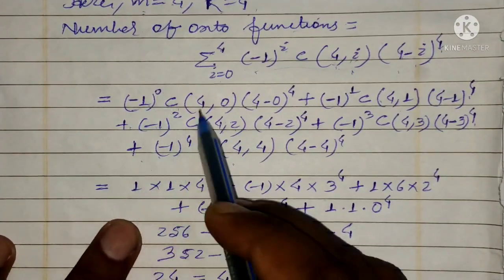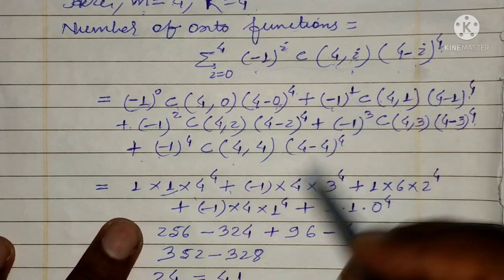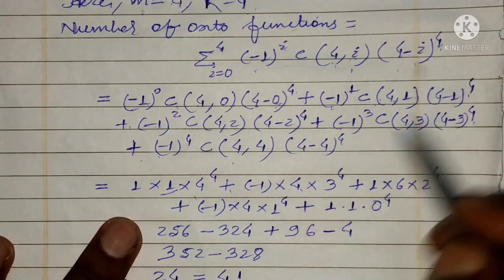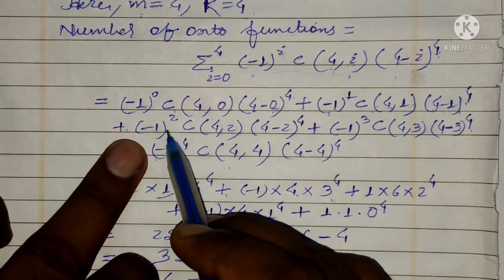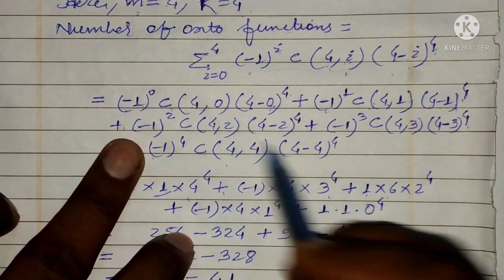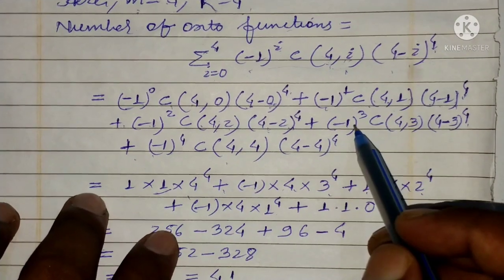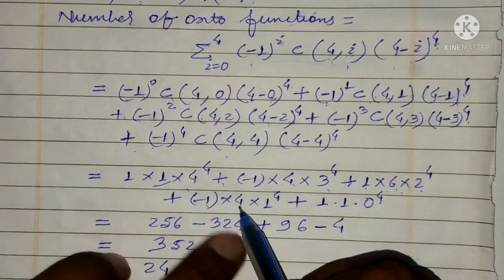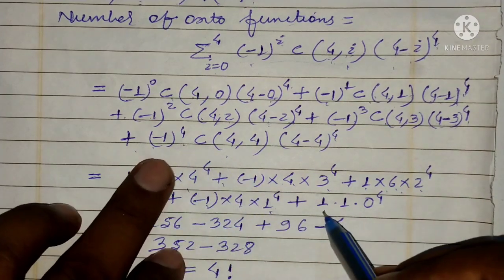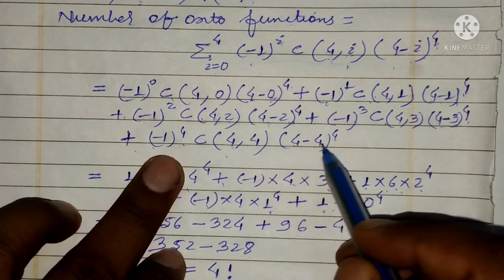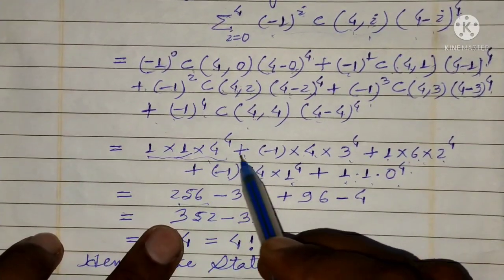(-1)^0 is 1, C(4,0) is 1, (4-0)^4 = 4^4 = 256. Then plus: (-1)^1 is -1, C(4,1) is 4, (4-1)^4 = 3^4 = 81, giving -324. Then plus: (-1)^2 is 1, C(4,2) is 6, (4-2)^4 = 2^4 = 16, giving +96. Then plus: (-1)^3 is -1, C(4,3) is 4, (4-3)^4 = 1^4 = 1, giving -4. Then plus: (-1)^4 is 1, C(4,4) is 1, (4-4)^4 = 0^4 = 0.